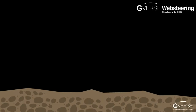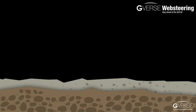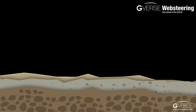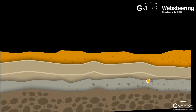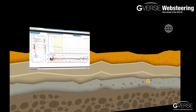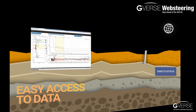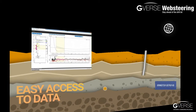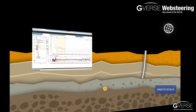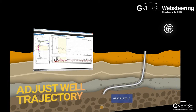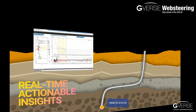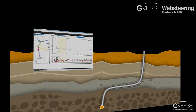Stay ahead of the drill bit through G-verse Web Steering — the only web browser-based geosteering application in the E&P industry. This intuitive application allows you to adjust your well trajectory on the fly through real-time information available on your web browser.